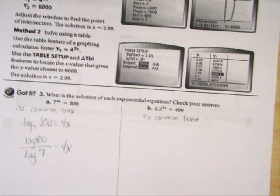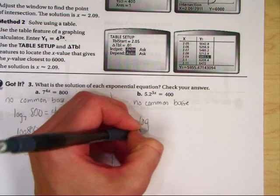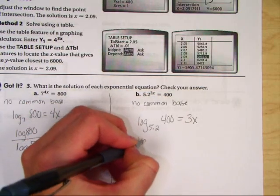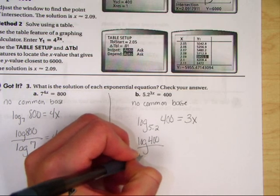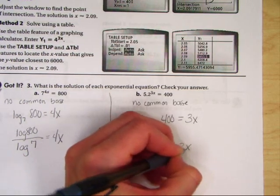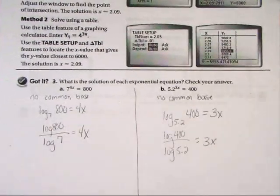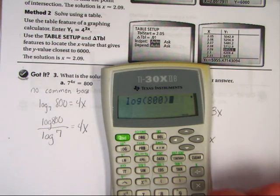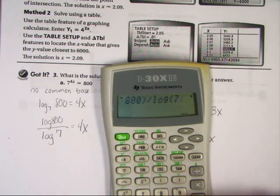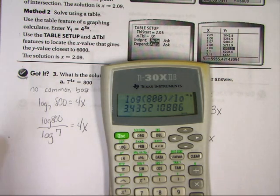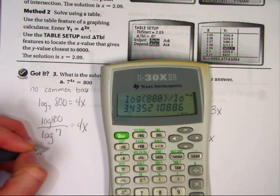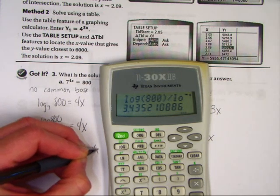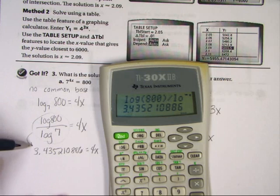Let's compare how the second equation is going to be very similar. This one will be a log with a base of 5.2 of 400, and that's going to equal 3x. Using change of base, I get log of 400 over log of 5.2, and that equals 3x. Now I'm going to get my calculator. We're going to do log of 800 divided by log of 7, and I get 3.4352. Write that down if you want, and only round at the very end.